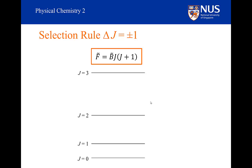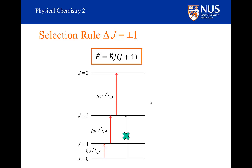Our selection rule for rotational spectroscopy of diatomics is that delta J is equal to plus or minus 1. This selection rule enables us to predict the spectrum of a diatomic molecule like carbon monoxide. Because of the selection rule delta J equals plus or minus 1, I can excite the molecule from J equals 0 to J equals 1, from J equals 1 to J equals 2, and from J equals 2 to J equals 3. But I can't do it from J equals 0 to J equals 2, and I can't do it from J equals 0 to J equals 3. So only certain transitions are going to be allowed.